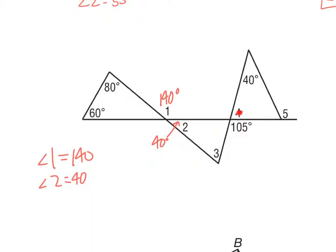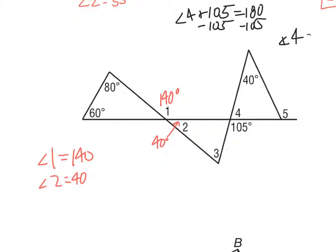These two angles are supplementary. Setting up angle 4 plus 105 equals 180, then subtracting 105 from both sides gives angle 4 equals 75 degrees. Since angle 4 and the opposite angle are vertical angles, that angle is also 75 degrees.